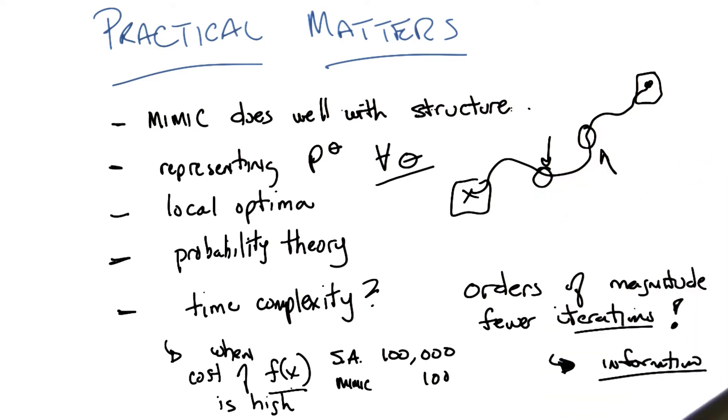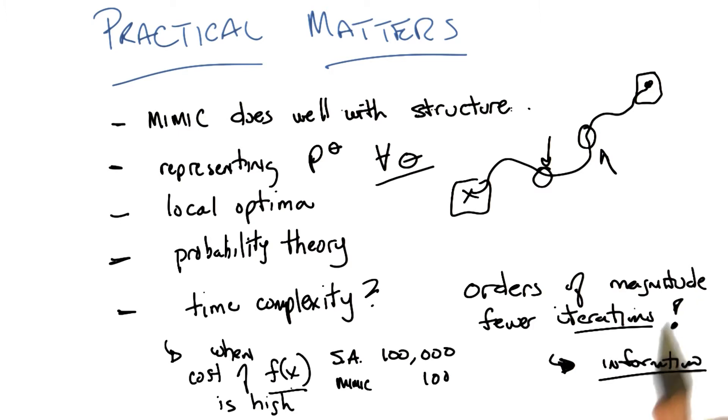And of course you can be very clever because remember theta will generate a bunch of samples for theta plus one. So if you keep track of the values you've seen before, you don't have to recompute them. So it's actually pretty hard to know exactly what that's going to be. But let's imagine that at every iteration you generate 100 samples.